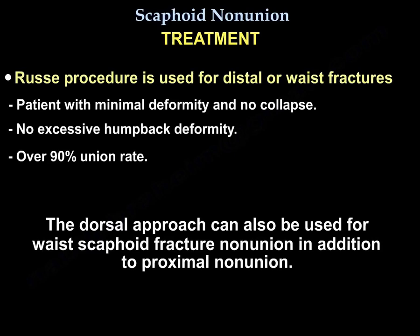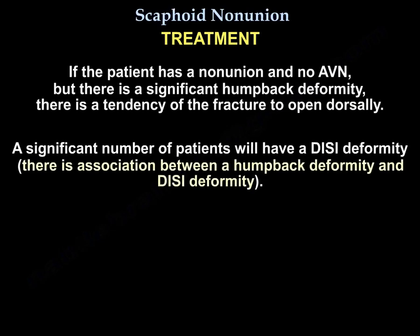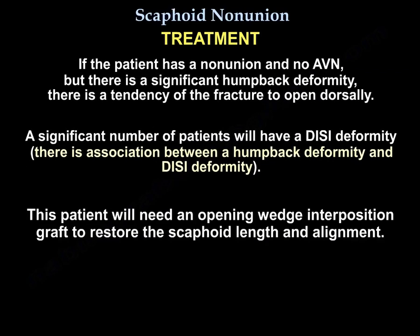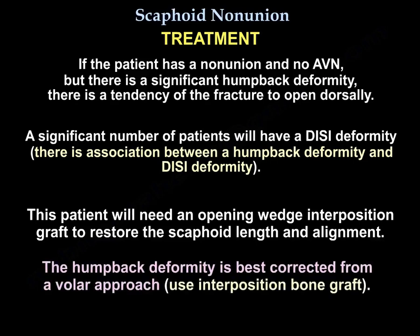The dorsal approach can also be used for waist scaphoid fracture non-union in addition to proximal non-union. If the patient has non-union with no AVN but a significant humpback deformity, there is a tendency for the fracture to open dorsally, and a significant number of patients will have a DISI deformity. That patient will need an opening wedge interposition graft to restore scaphoid length and alignment. The humpback deformity is best corrected from a volar approach.